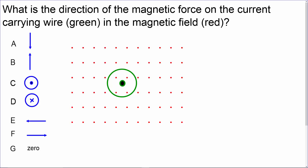What is the direction of the magnetic force in the current carrying wire in the magnetic field? Here we see the conventional current is pointing out of the page, as signified by the green lines. We also see that the magnetic field lines are also pointing out of the page.